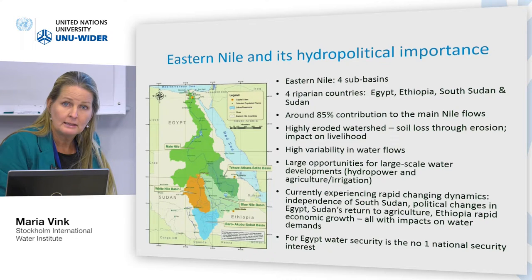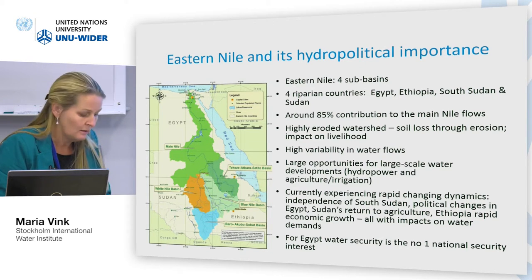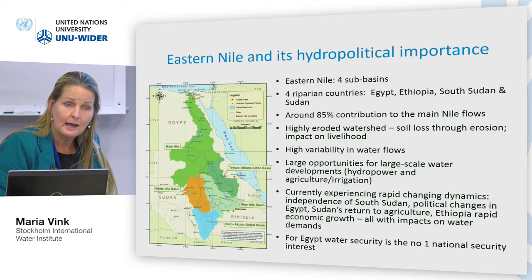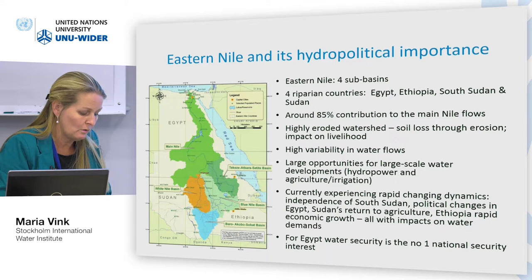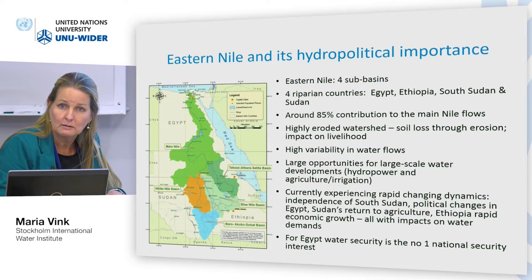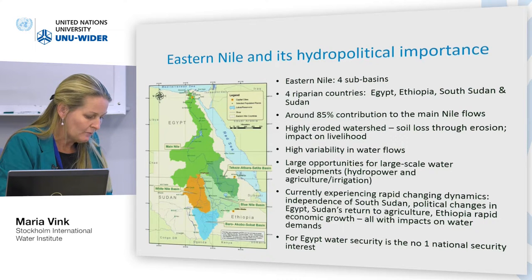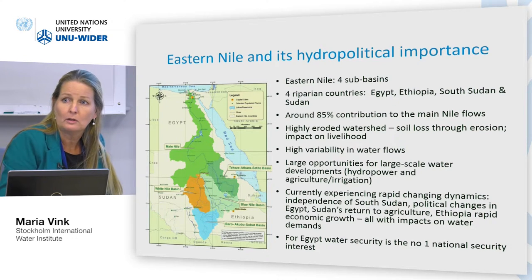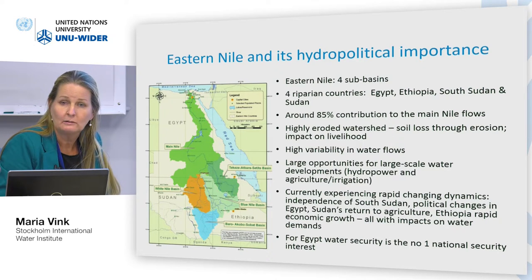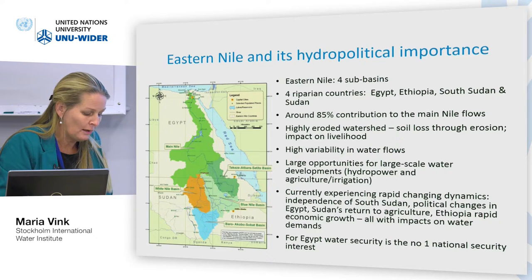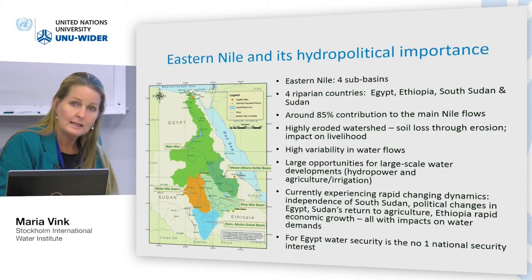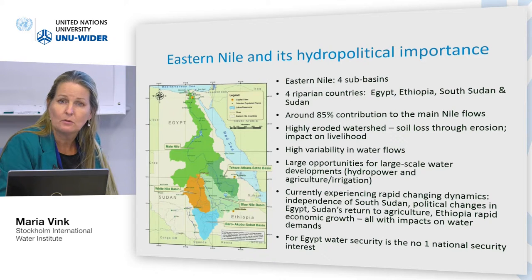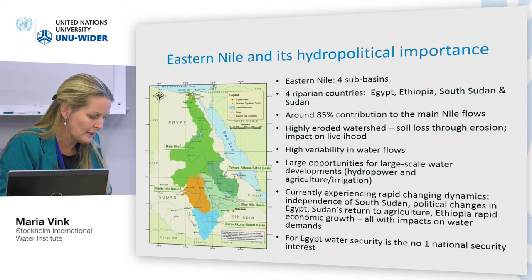We see rapid changing dynamics in this region over the last few years. We have South Sudan's independence in 2011 — suddenly there is a new country in the region. There was the uprising in Egypt with changing governments and instability that weakened Egypt's position. Sudan is moving from an oil economy to a post-oil economy, returning to a focus on agriculture. And then Ethiopia with rapid economic growth, some instability, and a shrinking space for civil society.